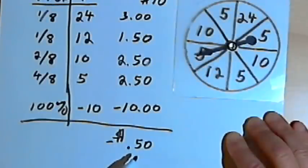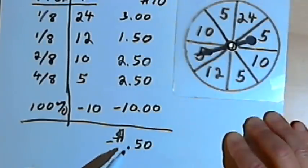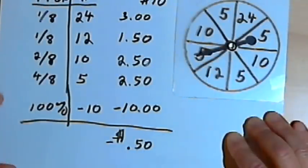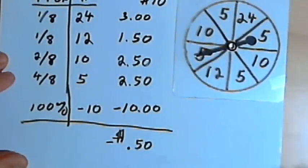If the expected value were positive, this would be a great game to play. You could play it over and over and over again, and on average you would keep getting money. If it's negative, you don't want to play the game. Because the more you play it, the more money you're going to lose. So that's basically how expected value works.